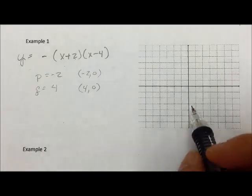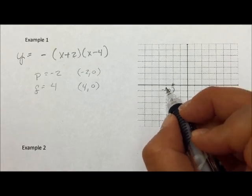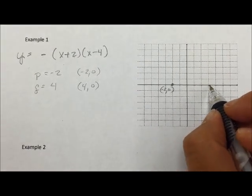So I can go over and graph those two intercepts. I have an intercept at negative 2, 0, and I have an intercept at 4, 0.